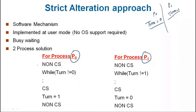Now check the solution. The left-hand side solution is written. For P0 process: while turn is not equal to 0, P0 will wait — it will keep checking the condition. When turn equals 0, it will enter and execute the critical section. It is allowed. As it will finish execution, it sets turn equal to 1.